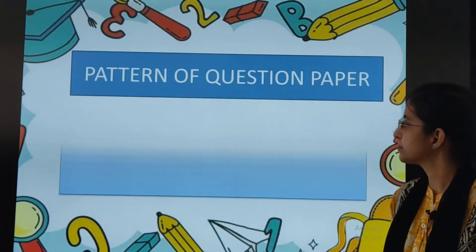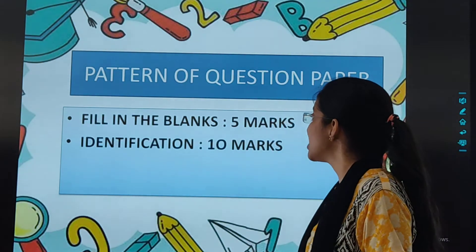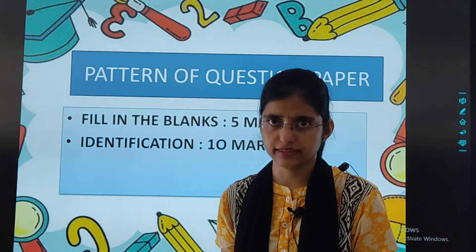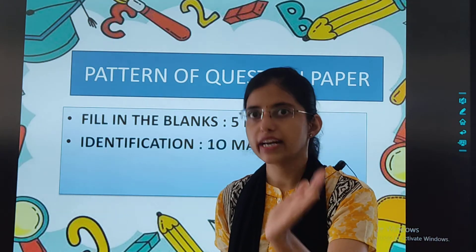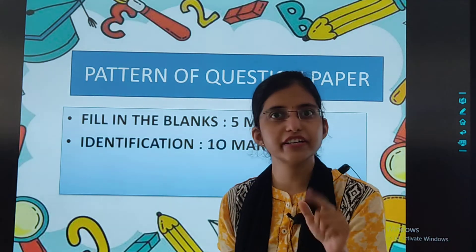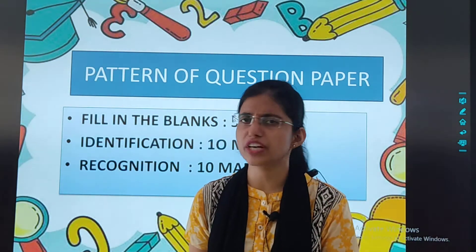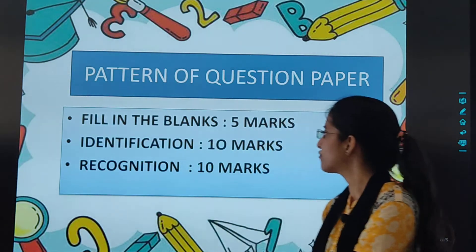Now we will see the pattern of the question paper. Fill in the blanks — 5 marks. Identification — 10 marks. There are many exercises behind your chapter. There are exercises in your textbook to identify the subject and predicate, identify whether the sentences are assertive, imperative, and so on. Recognize whether it is subject or predicate, whether it is types of sentences. These types of questions will be there.